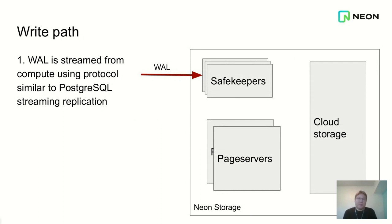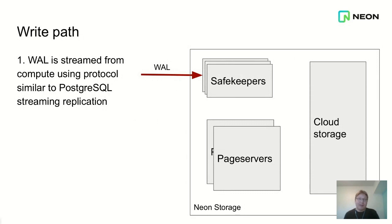We acknowledge the commit to the client when it's safely, durably stored on at least two of those safekeeper nodes. This gives you synchronous replication out of the box. Normally with Postgres, to have the same kind of durability, you would need to set up one primary and at least two more standby nodes with synchronous replication, which can be tricky. With Neon, you get that out of the box. You never lose a recent transaction, and it's always clear what is the head of the database — you don't need to guess in a disaster scenario.